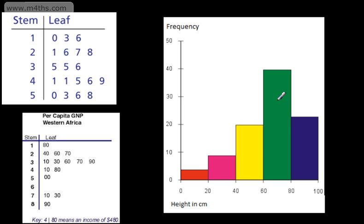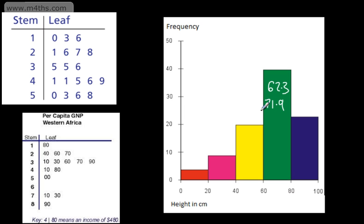The only problem with the histogram is that we don't know the individual value of each of the plants. For example, in the modal class I might have had 62.3, I might have had 71.9, and so on. I can't tell what each of these 40 or so plants actually measured.